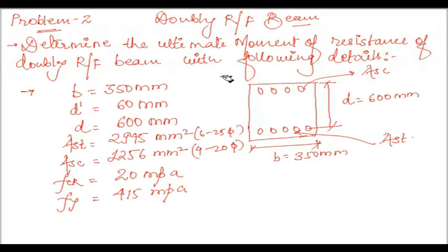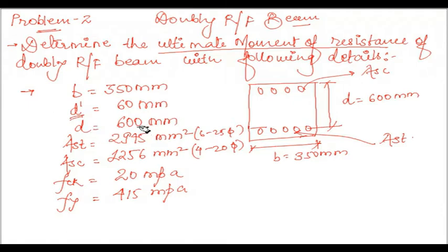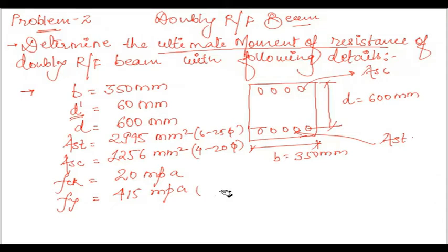In all analysis problems, either we need to calculate the design load or design moment. In this problem, we need to calculate the ultimate moment of resistance for a double reinforced beam. The beam width is 350 mm, effective cover is 60 mm, effective depth is 600 mm, area of steel in tension is 2945 mm² (6 bars of 25 mm dia), area of steel in compression is 1256 mm² (4 bars of 20 mm dia), FCK is 20 MPa, and FY is Fe415.